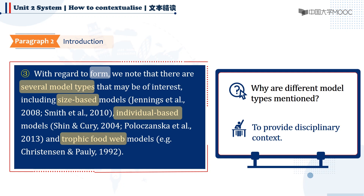In other words, they form the research background of the present study. One advantage of including disciplinary context is that it shows the readers the paper is built upon what has already been done in this field. In this way, it shows that the research is well grounded.